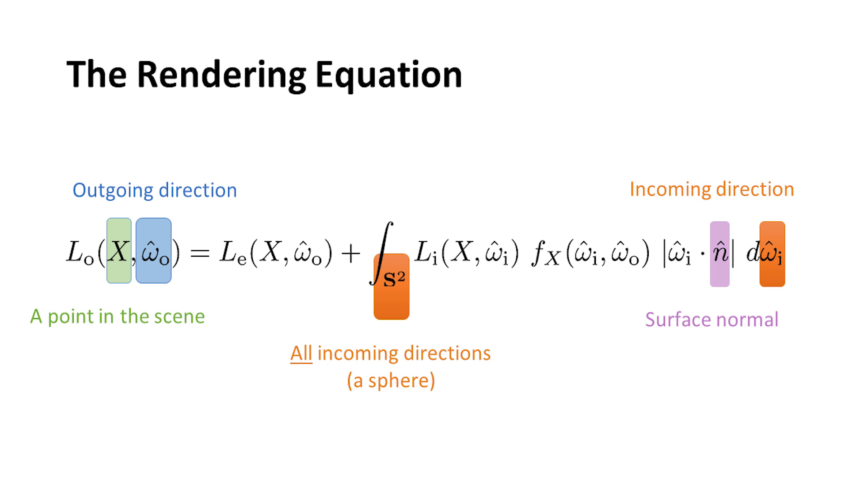There's also an incoming direction, omega-hat-i, and that's just some light coming in from some other direction. There's the surface normal—if you have a flat surface like the floor, the normal is the direction pointing straight up. And then there's this s-squared term, which means all incoming directions.